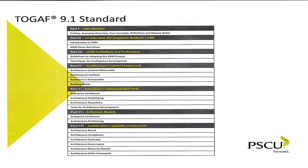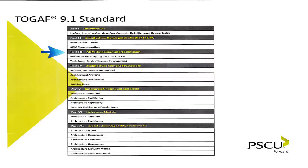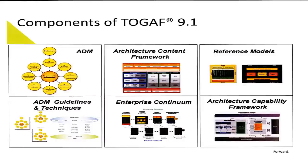Now we'll get into the details of TOGAF. Part one is the introduction — really the preface and core concepts. Part two is the Architecture Development Method, the ADM — the A, B, C, D thing. Then there are the ADM guidelines, the architecture content framework, the enterprise continuum and tools, the reference models, and the architecture capability framework. There are drawings throughout the slide deck showing a representation of each of these major parts.